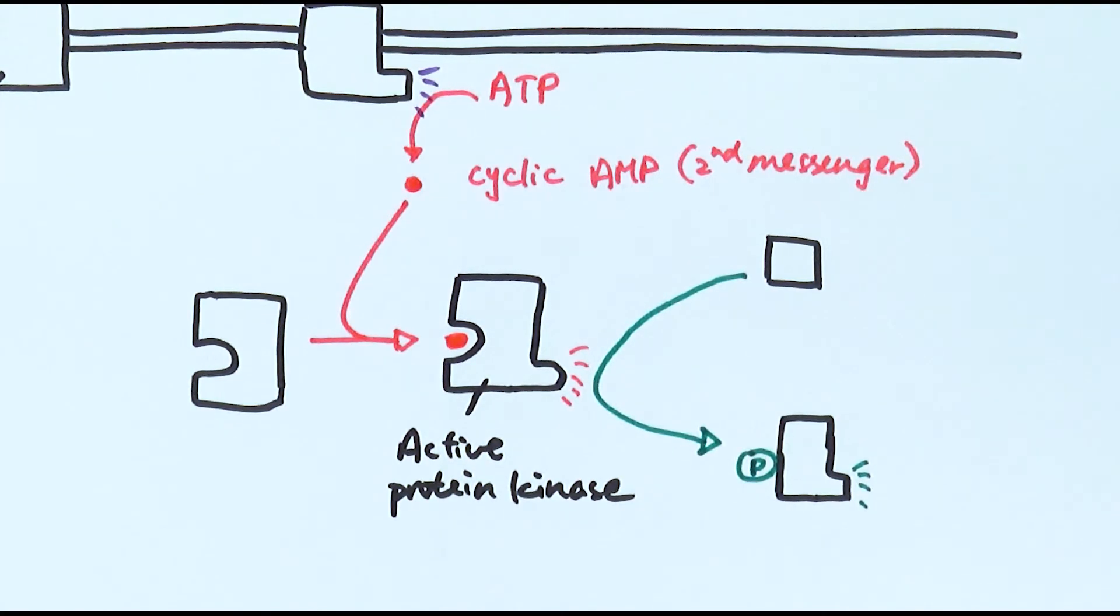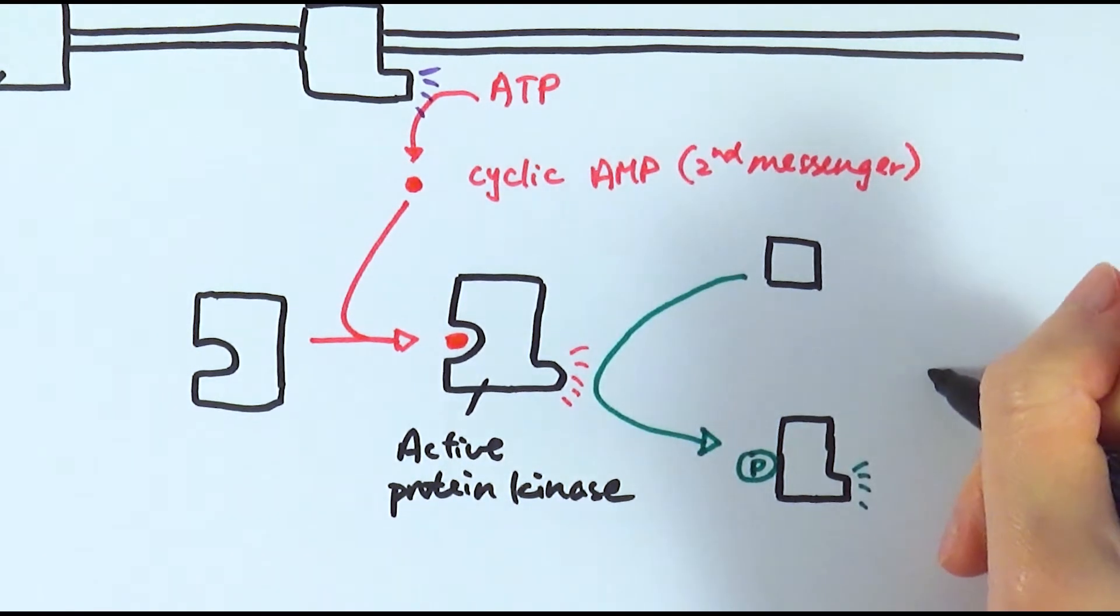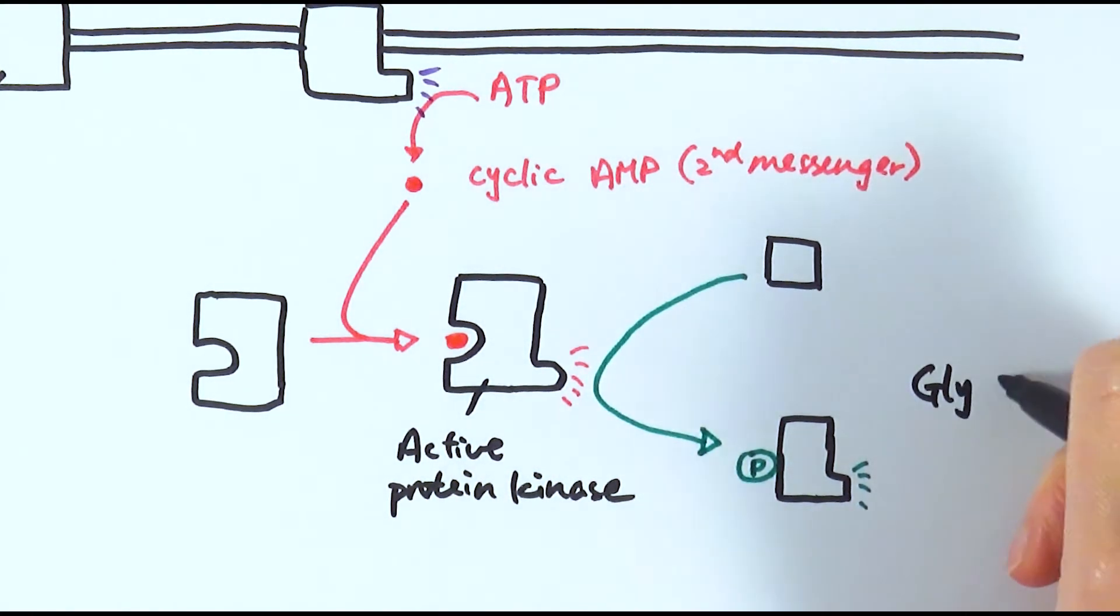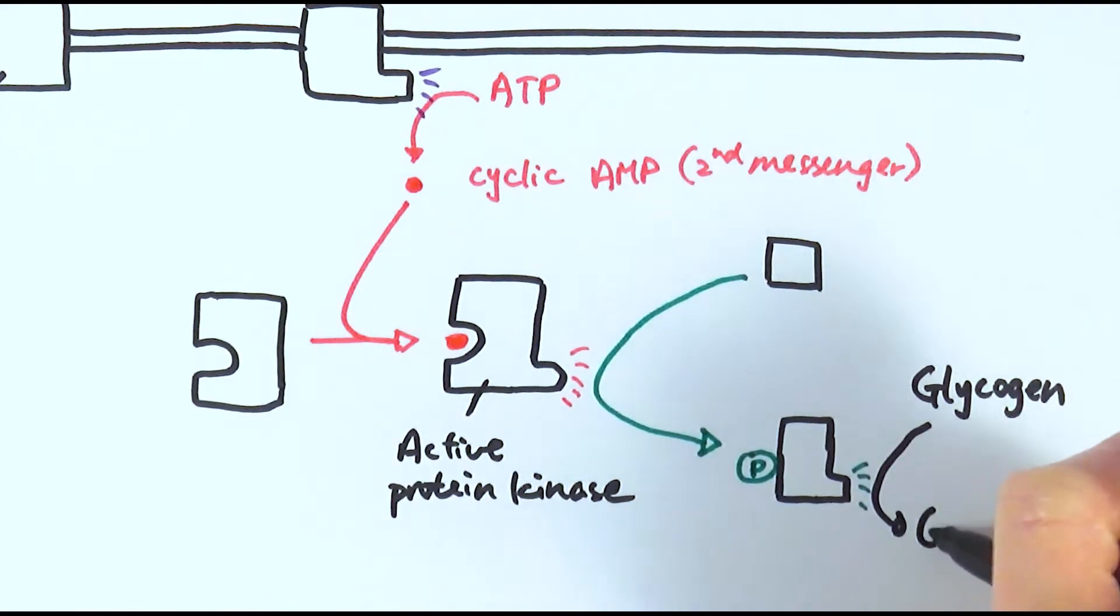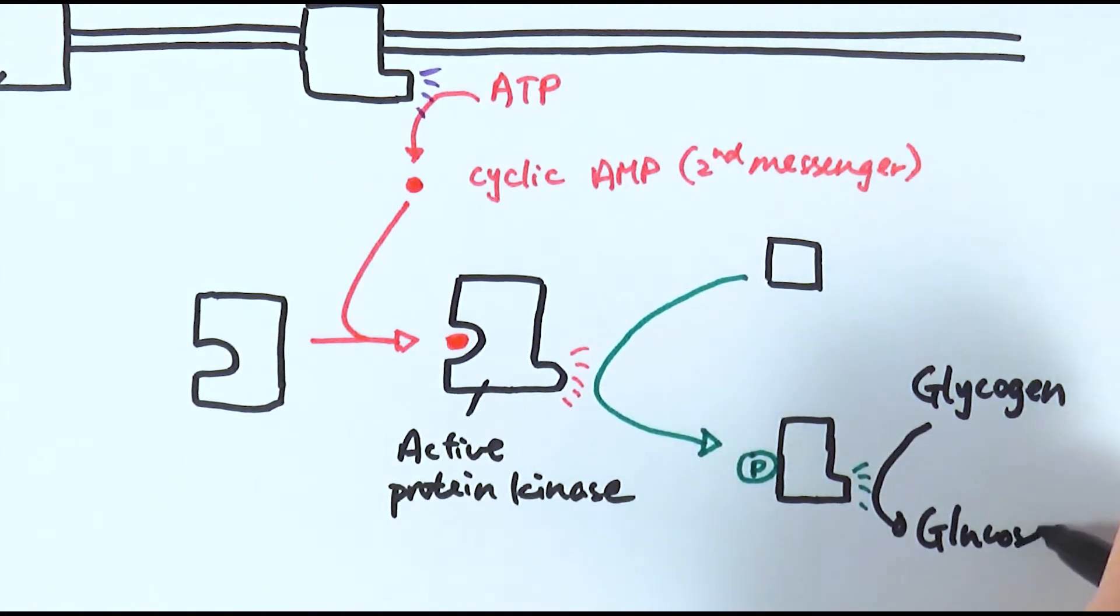It could go on to activate other enzymes to do other things. Or if this is the end of the cascade, then one of the main functions, one of the things that adrenaline could do, is to convert glycogen to glucose inside the cell. This is how they do it.